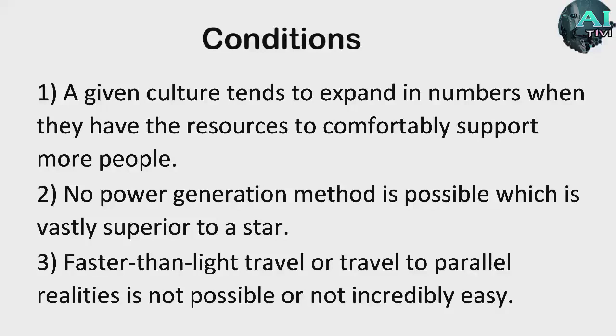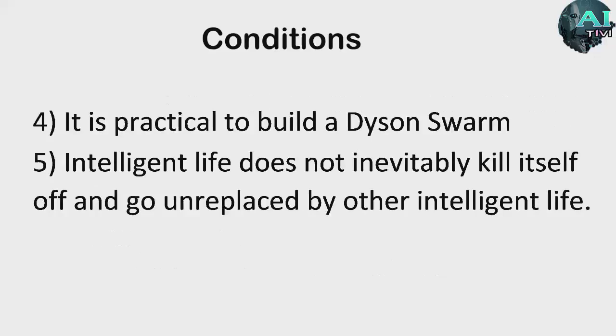Now to repeat those, they are: Number 1, a given culture tends to expand in numbers when they have the resources to comfortably support more people. Number 2, no power generation method is possible which is vastly superior to a star. Number 3, faster than light travel or travel to alternate realities is not possible or if possible not very very easy. There are two other assumptions that we'll get to in a little bit of detail in a bit, but they are: Number 4, it is practical to build a Dyson Swarm, obviously if it wasn't it wouldn't be a dilemma. Number 5, intelligent life does not inevitably kill itself off or go unreplaced by other intelligent life.